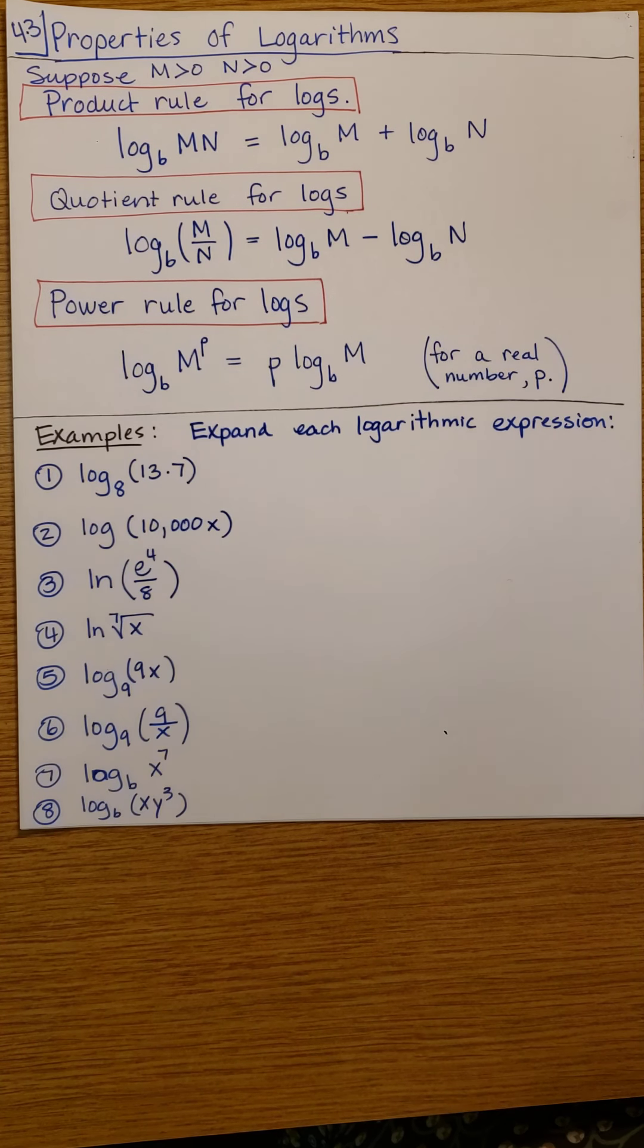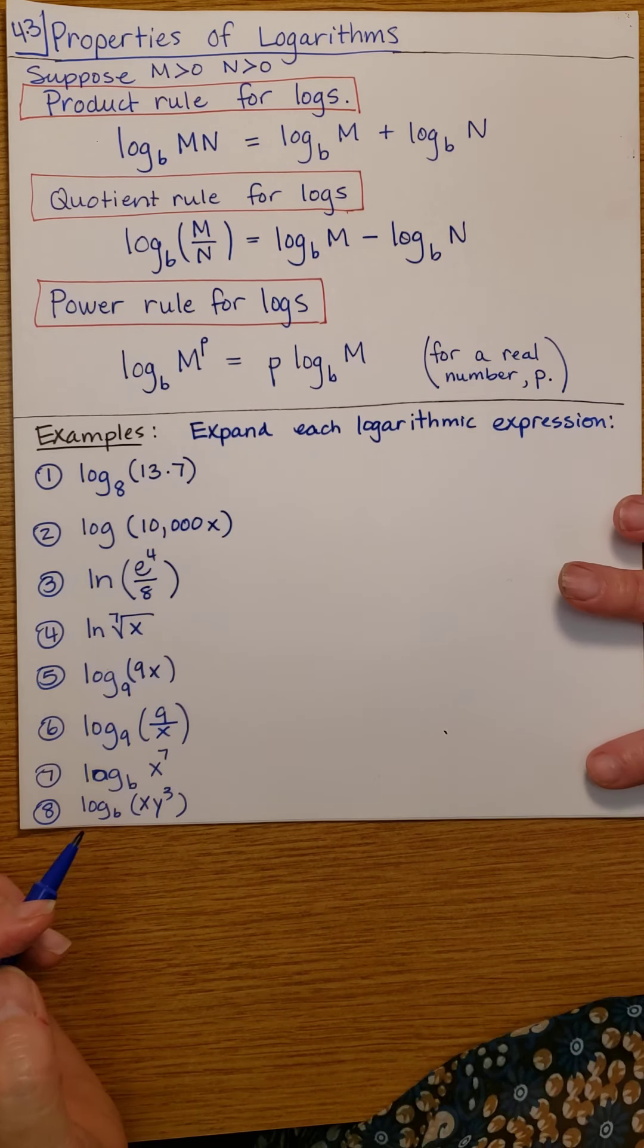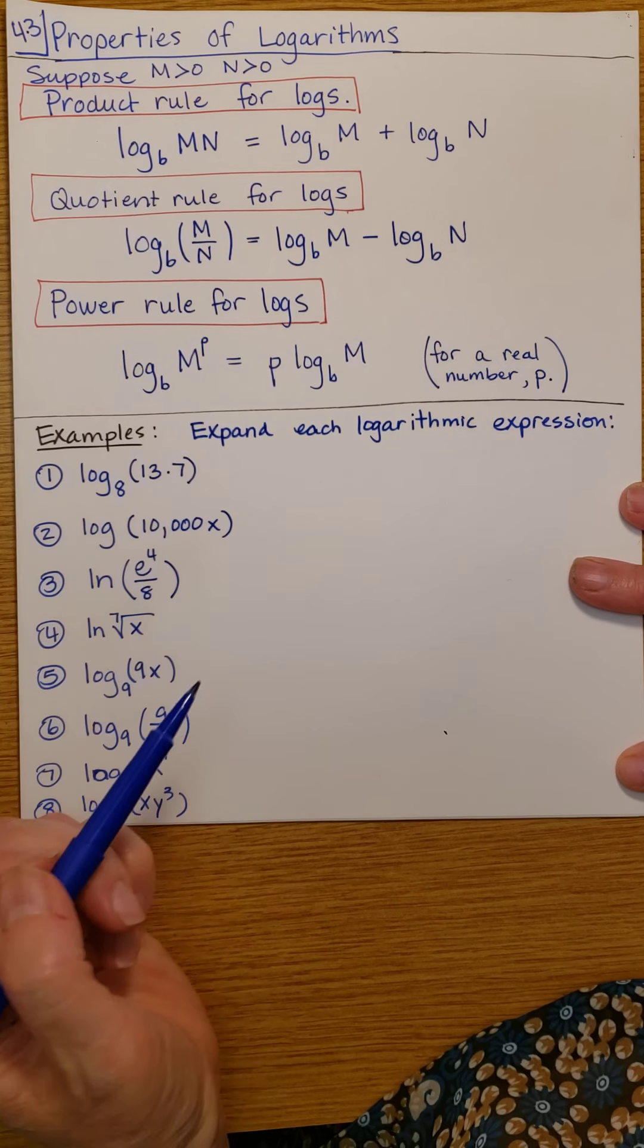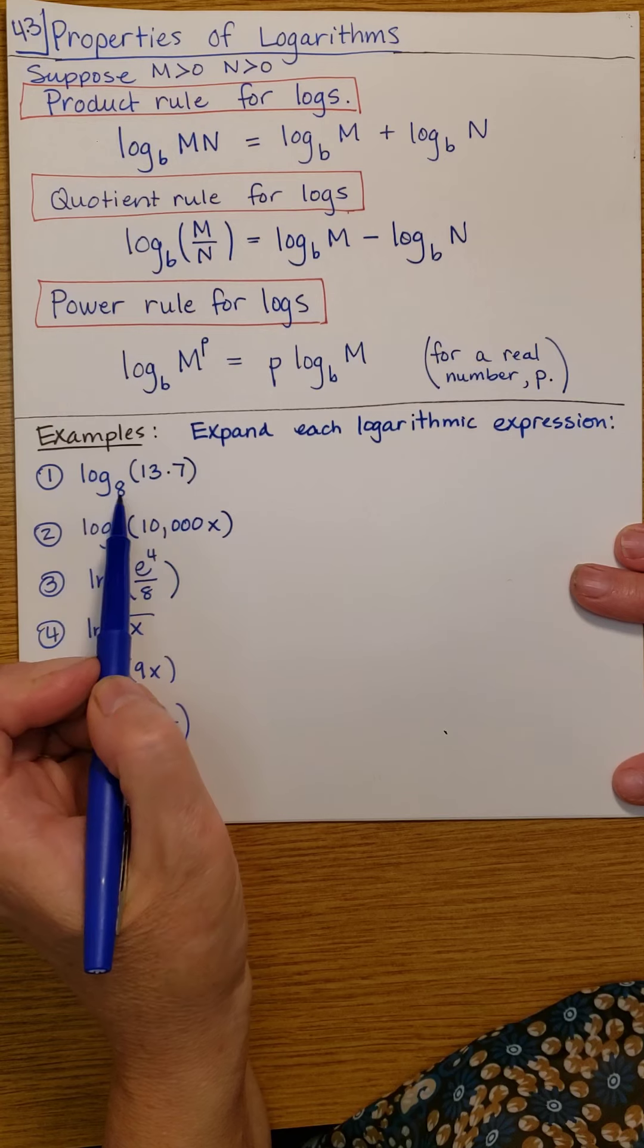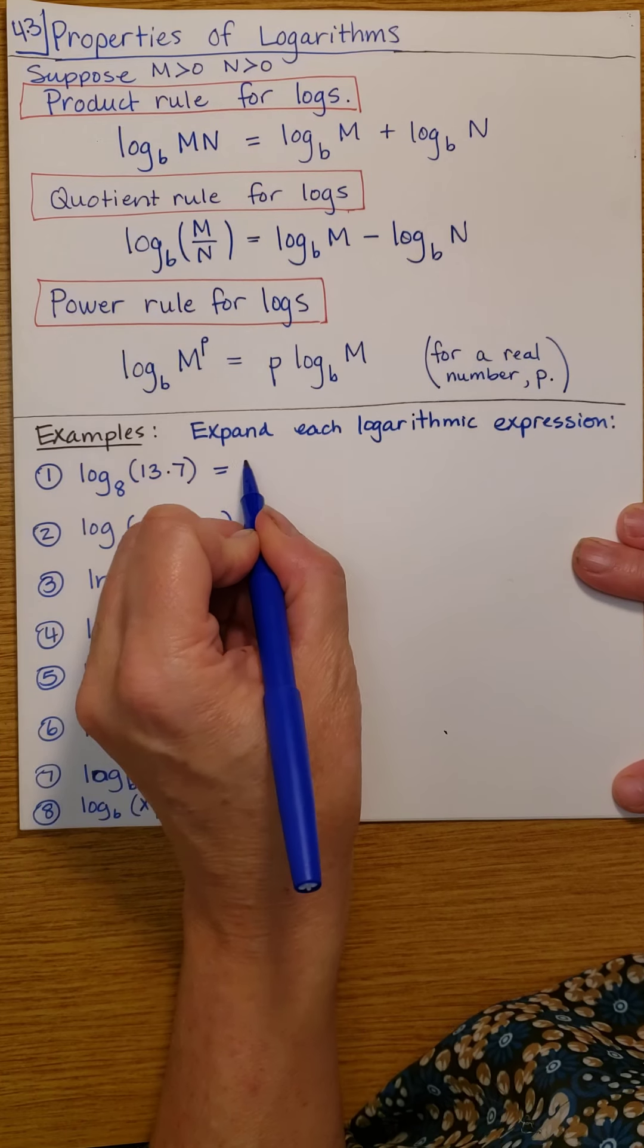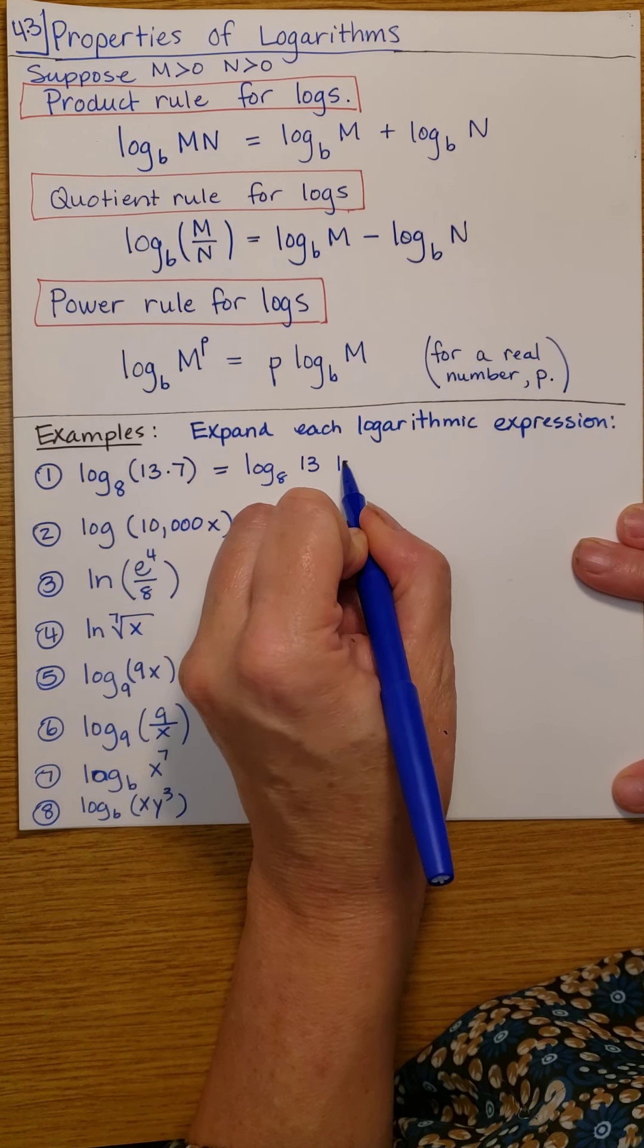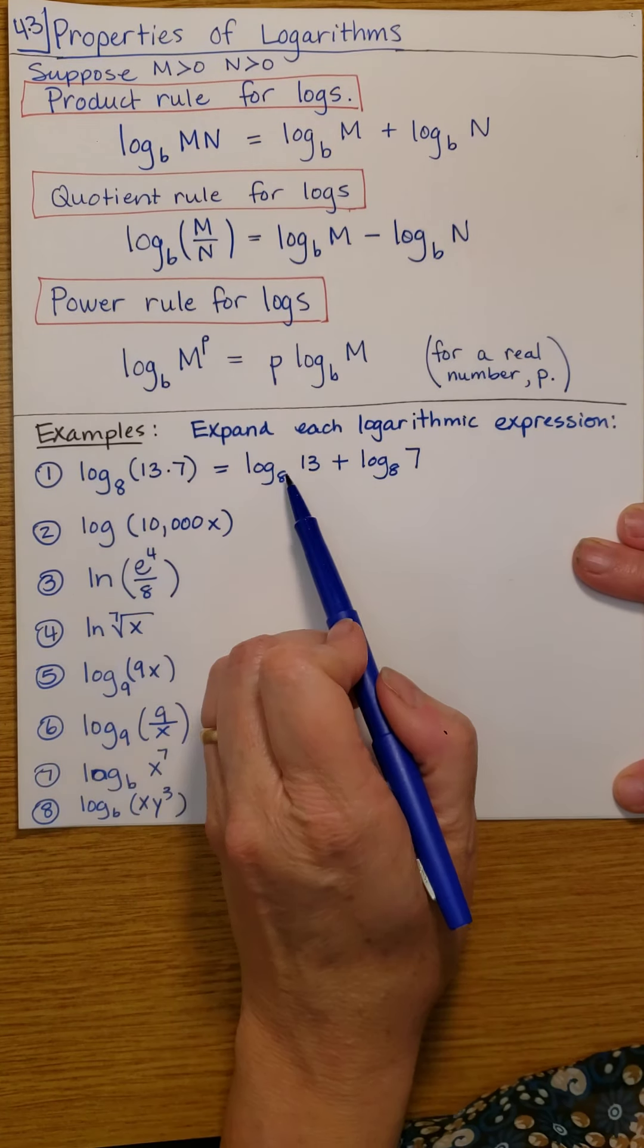So let's look at some examples to see how this works. We're going to expand each logarithm and then simplify. I'm not going to use a calculator, so if I can't solve it, I'm just going to leave it. Here we have log base 8 of 13 times 7. We can expand that to be log base 8 of 13 plus log base 8 of 7. So we've expanded it to a sum.